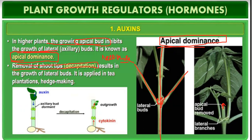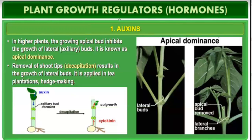Removal of the shoot tip — called decapitation — results in the growth of lateral buds. This is applied in tea plantations and hedge-making.